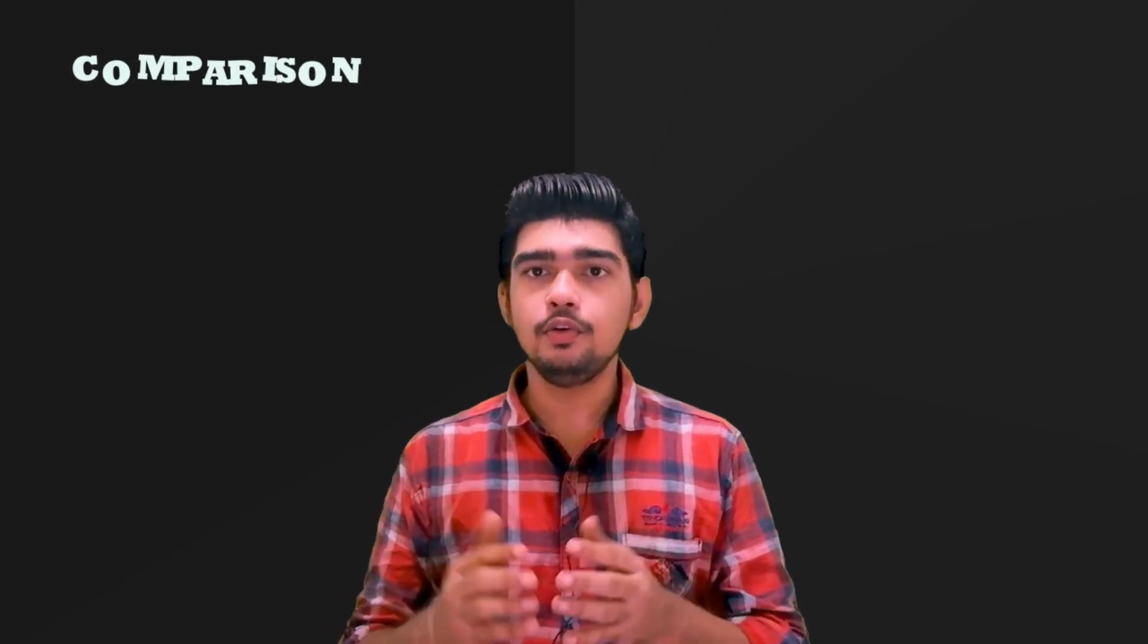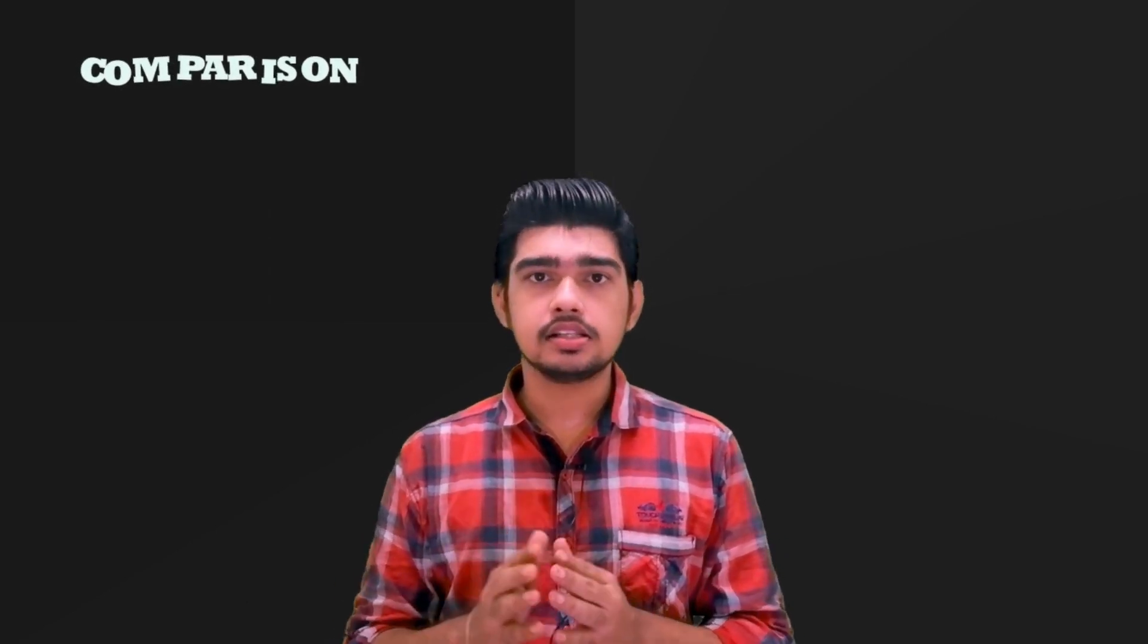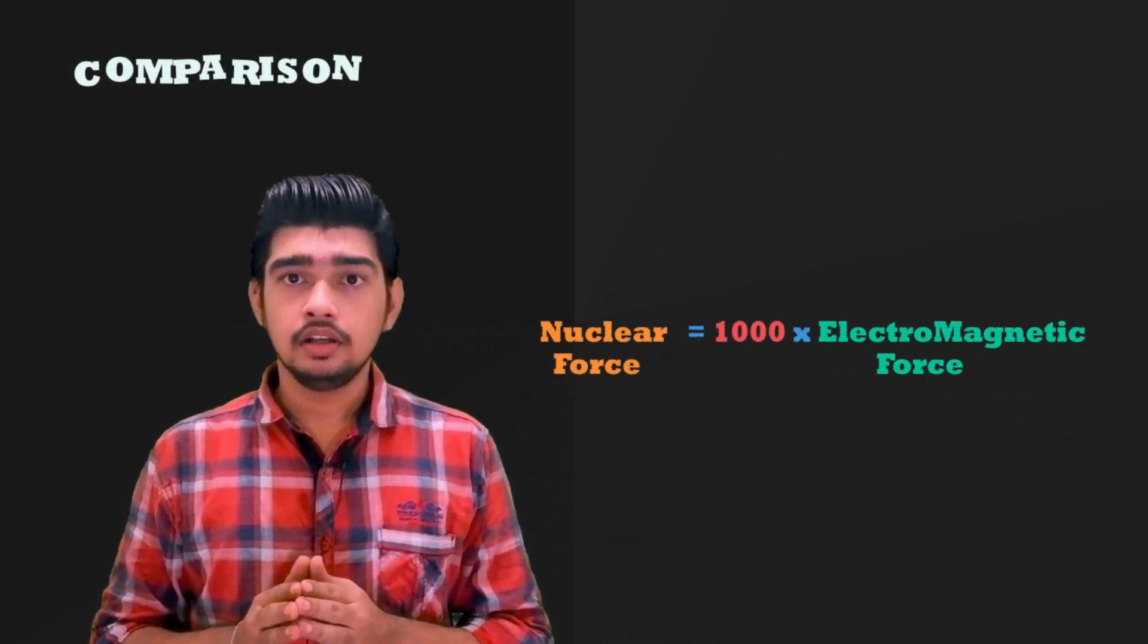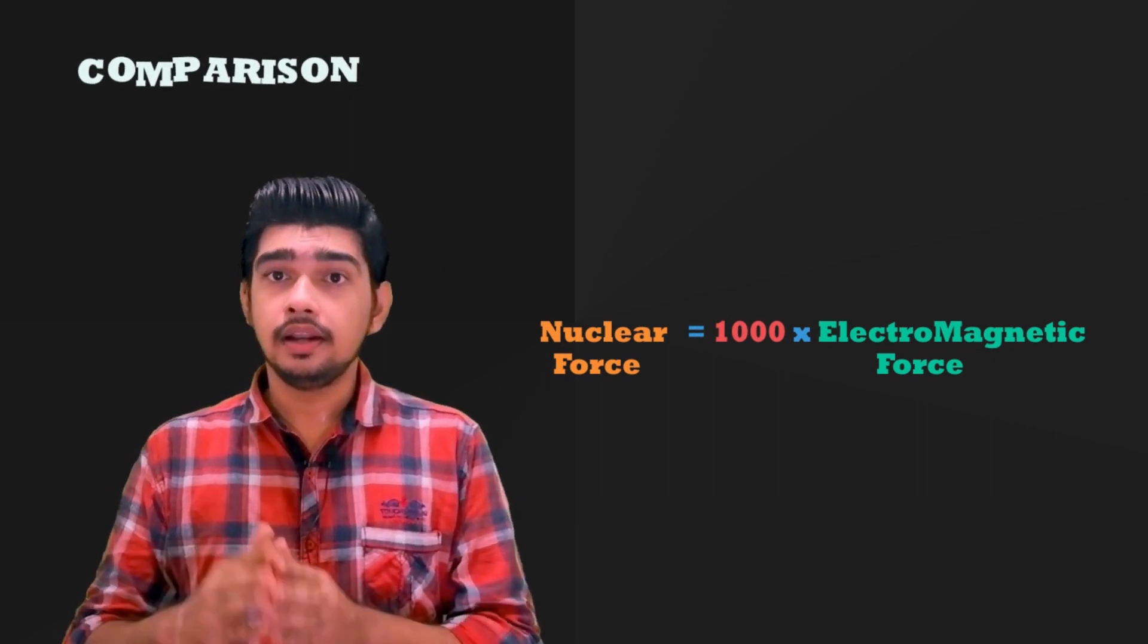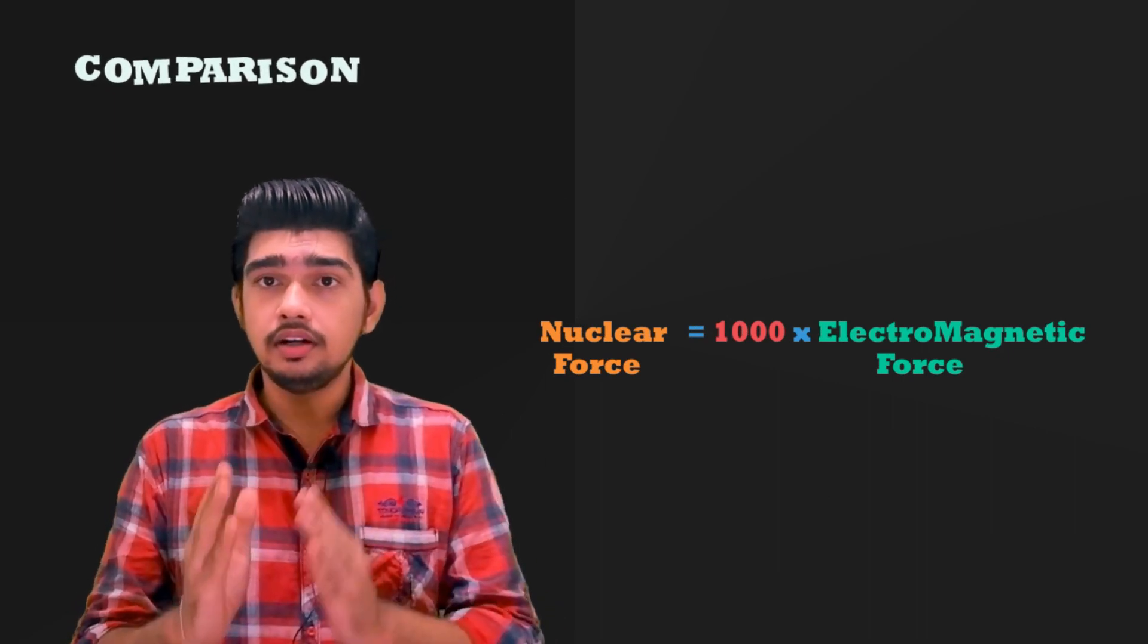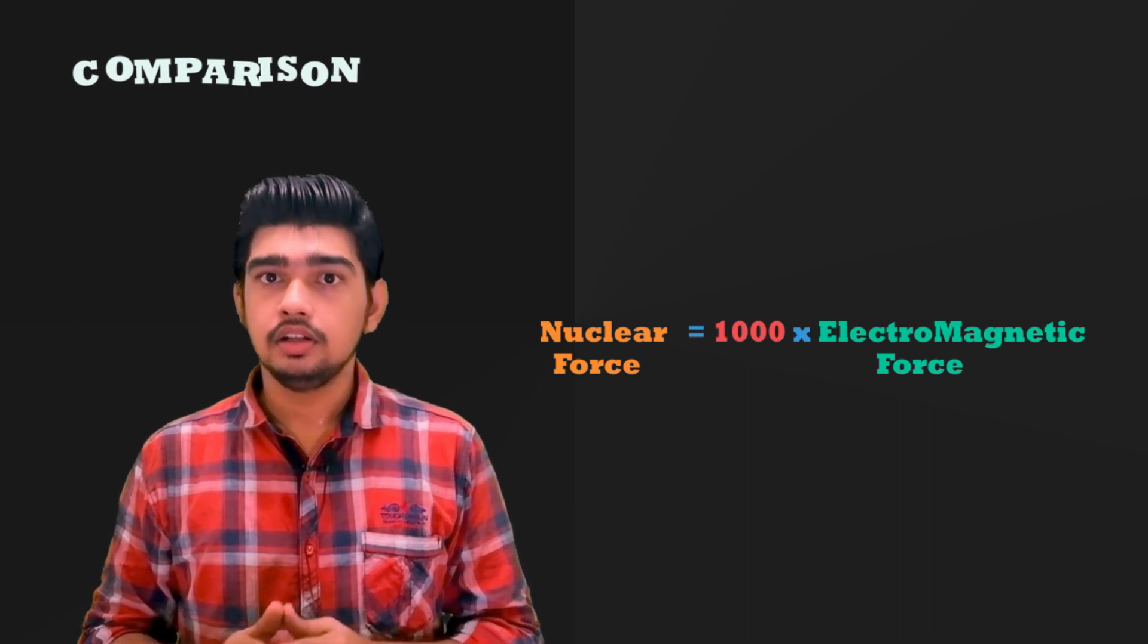Now let us compare the relative magnitude between these forces or interactions. First, let us compare nuclear force and electromagnetic interaction. Here, nuclear force is thousand times greater than electromagnetic interaction, or nuclear force is 1000 times equal to electromagnetic interaction.